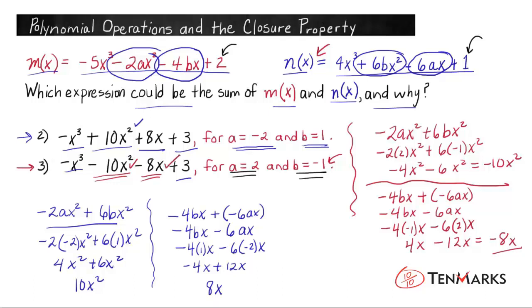So both of these expressions could be the sum of m(x) and n(x). And the reason why is because for the first one, when a = -2 and b = 1, this sum works.